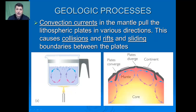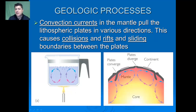Just like our atmosphere, we see convection currents happening in the upper mantle in the asthenosphere. Hot magma rises and bumps into our lithosphere, helping it to shift and move slightly. Then as it cools, it falls back down into the lower portion of the asthenosphere. This causes collisions, rifts, and sliding boundaries between tectonic plates.